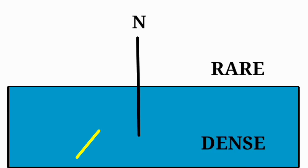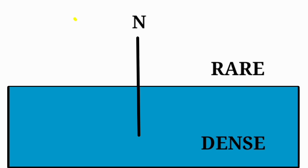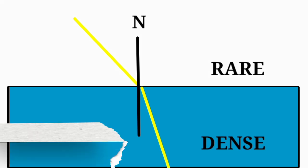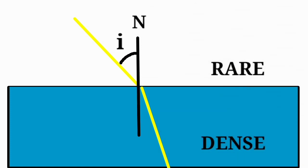The question is: light travels through a rare medium. For example, light in a rare medium travels along a normal line. The incident ray makes an angle with the normal — the angle of incidence is high. The reflected ray makes an angle with the normal — the angle of reflection is low.